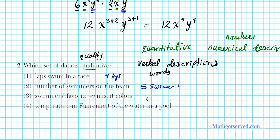Swimmers' favorite swimsuit colors: green. Temperature in Fahrenheit of the water: 70 degrees. Which of these descriptors are just words? The answer is option number three, because it's describing something that's not a numerical value. You cannot assign a number to a color. Laps: four, that's quantitative. Number of swimmers: five, that's quantitative. Temperature: 70, that's quantitative. Options one, two, and four are quantitative, but we're looking for qualitative. The answer is option number three.